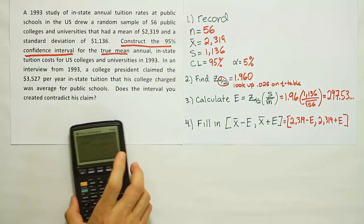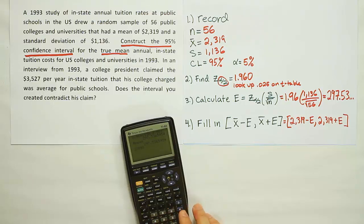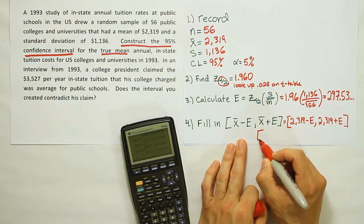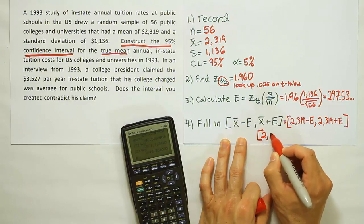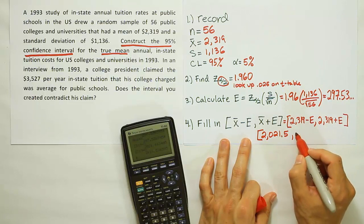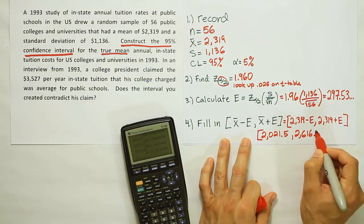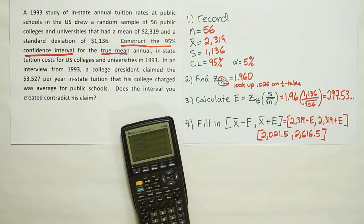I'm going to go ahead and do that in my calculator very easily now that I've stored that error into my calculator. So I'm going to do 2,319 minus the error, and then I'm going to do the same thing again, but this time plus the error. So my final result then ends up becoming 2,021.5 up to 2,616.5. And that's my confidence interval.